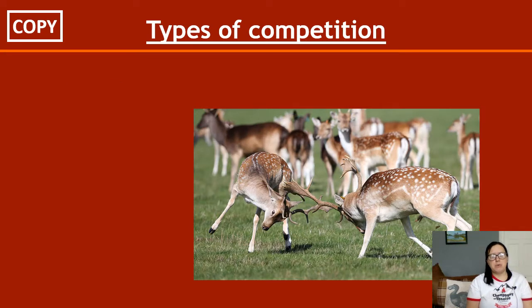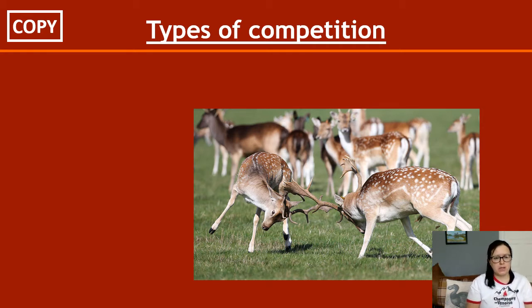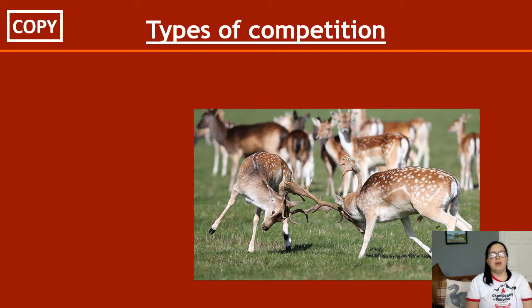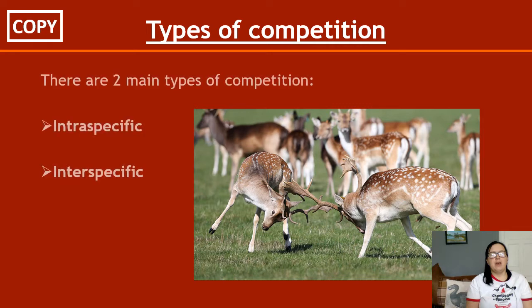The two types of competition are intraspecific and interspecific. A good way to remember interspecific is that it's like 'international' — international means something happening between different countries, and interspecific is talking about things happening between different species.